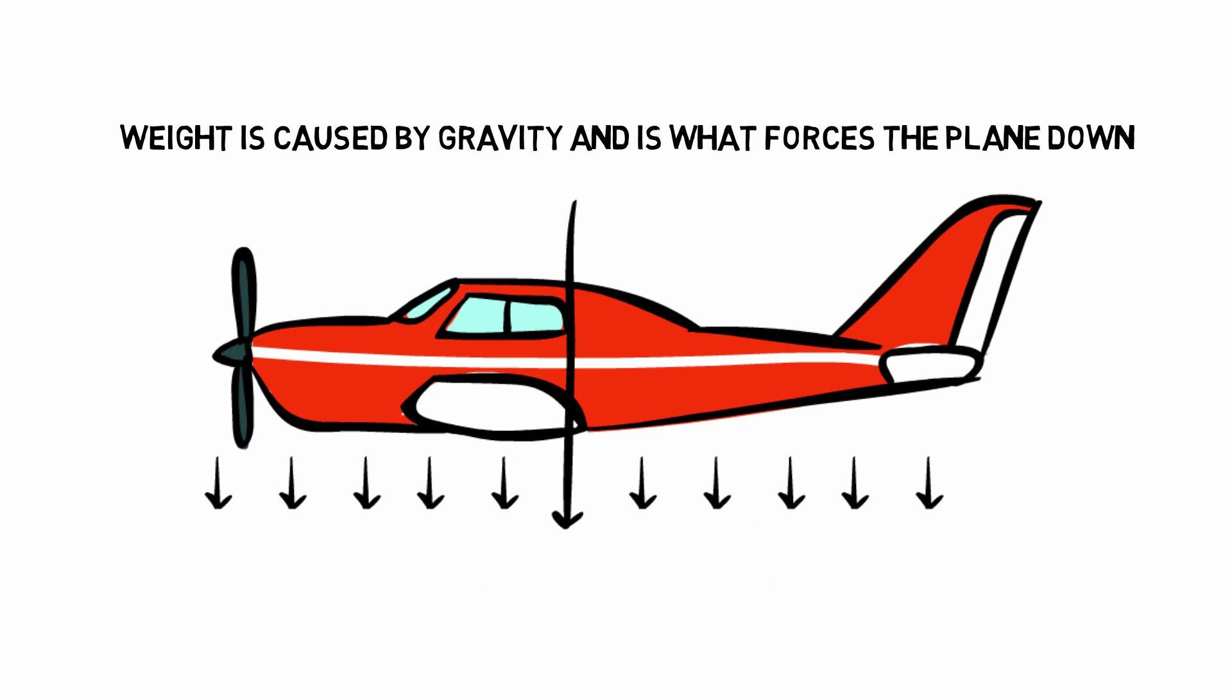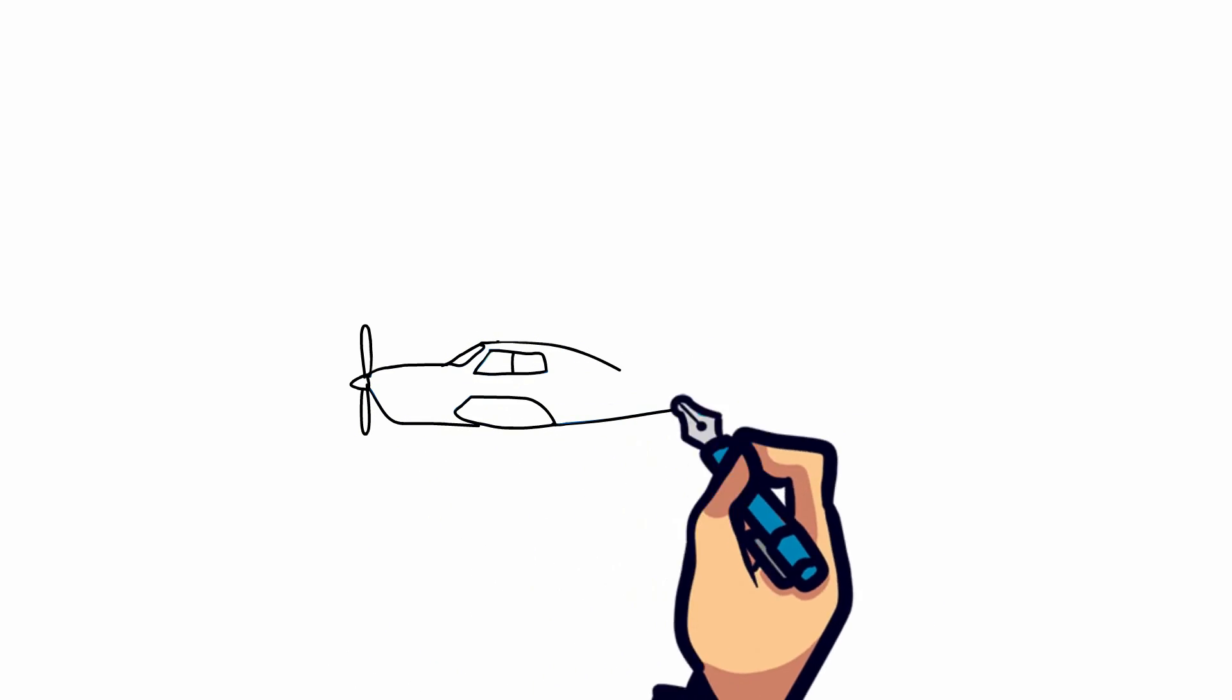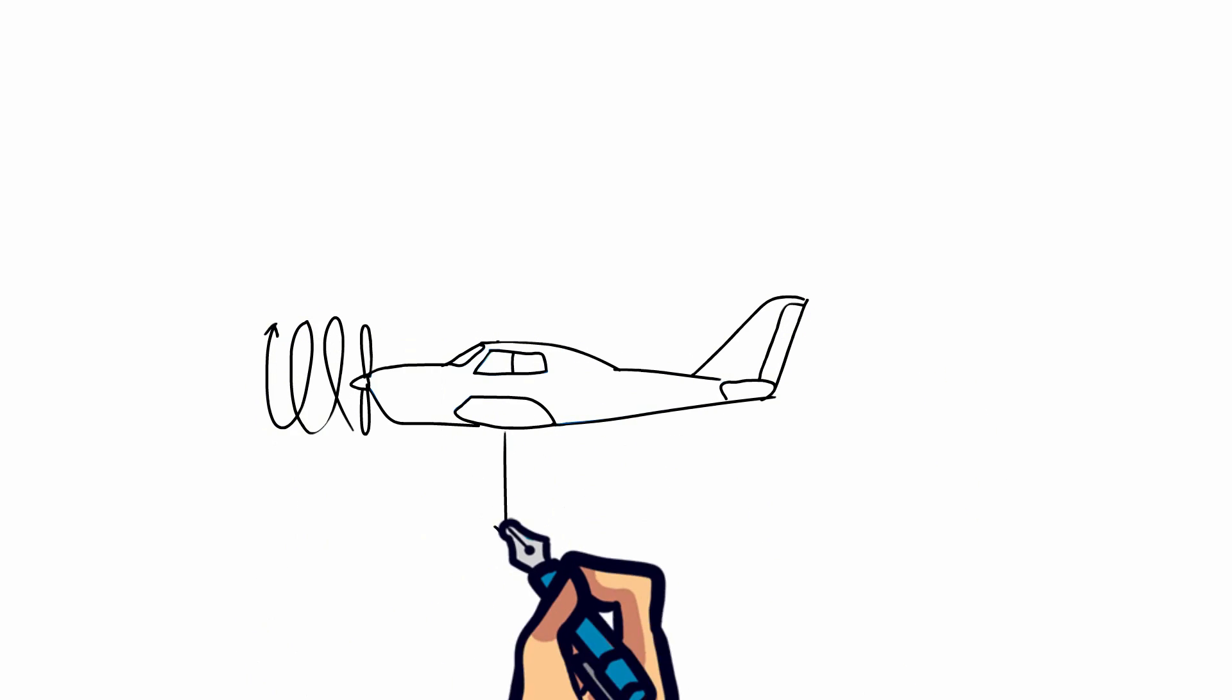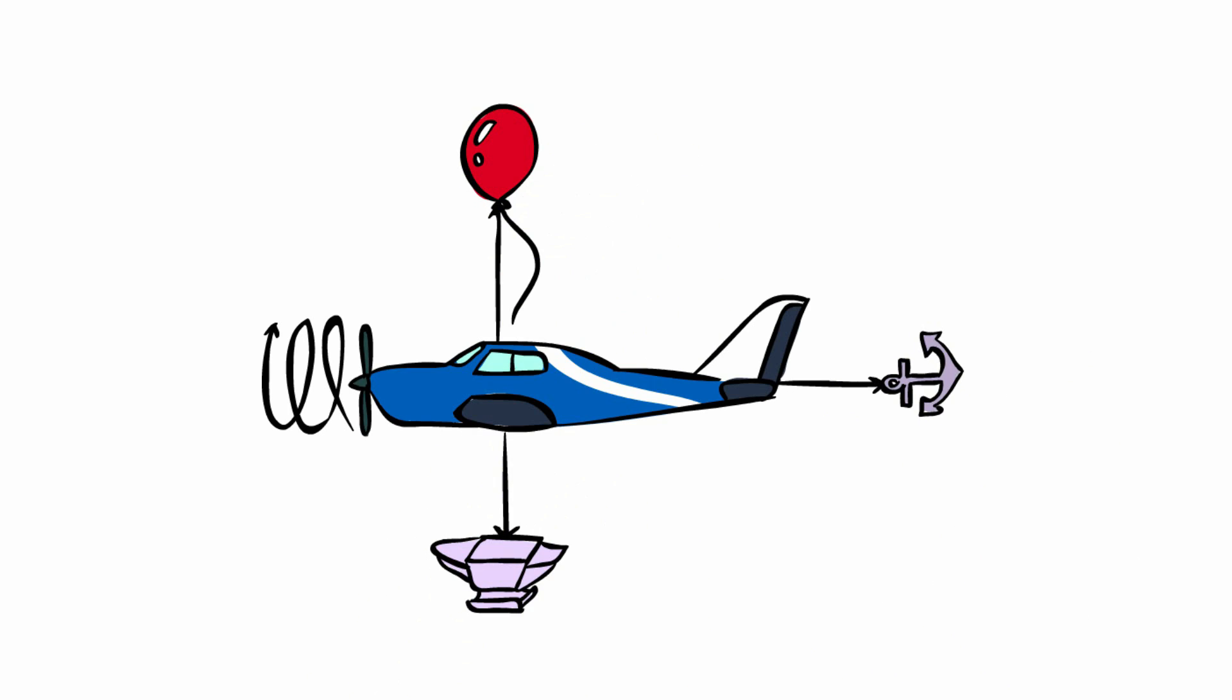When all four forces are working together, this causes the plane to fly. Lift and weight work together to move the plane up and down, while thrust and drag work together to speed and slow the plane down.